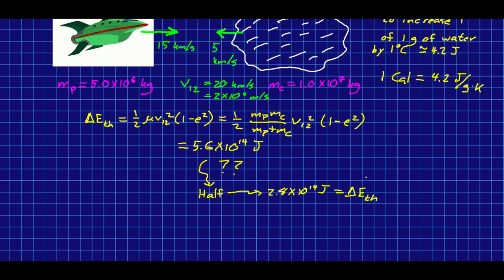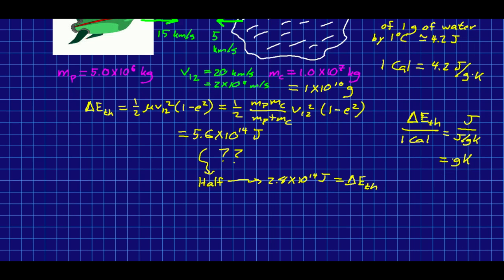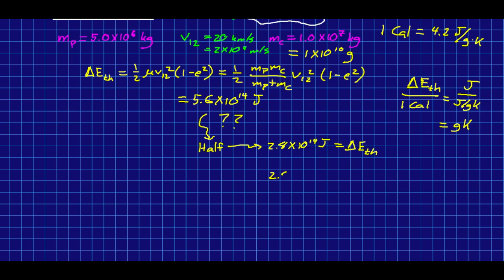And let's see how much that warms the comet up. What do we have to do? If we take our E-thermal and divide by 1 calorie, then we end up with something in joules divided by joules per gram kelvin. Or in other words, we get something in gram kelvins. So we would now have to divide by the inertia of the comet to get a change in temperature. And we'd want to work in grams, right? So this is 1 times 10 to the 10 grams.